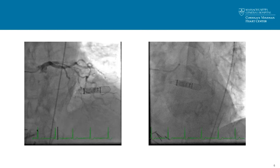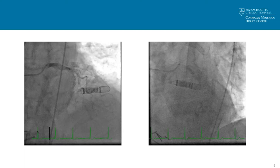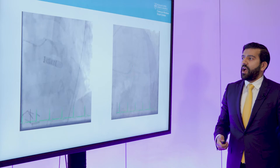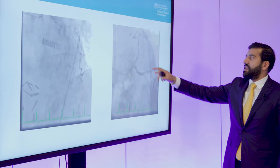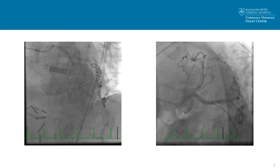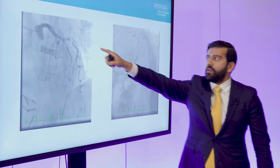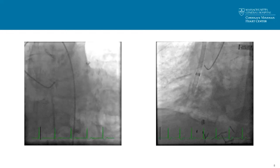This is an apicranial view where you can see the LAD coursing — there may even be a subtotal component to the LAD, and it's somewhat tortuous. To round out the left system: the main disease is predominantly in the LAD, some disease distally in the circumflex but probably not flow-limiting, and calcification in the left main that is probably fine and doesn't require intervention.